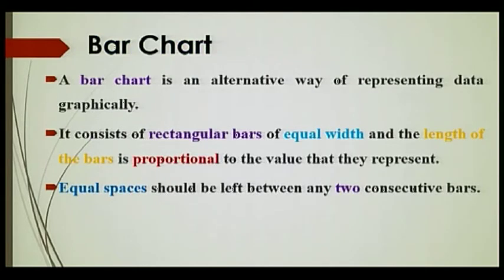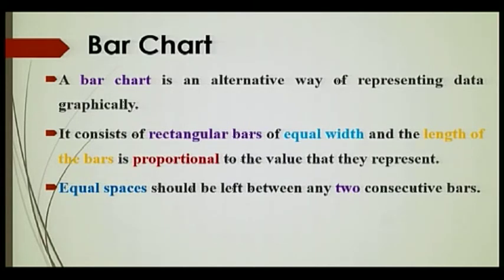What is a bar chart? A bar chart is an alternative way of representing data graphically. It consists of rectangular bars of equal width and the length of the bars is proportional to the value that they represent. Equal spaces should be left between any two consecutive bars. These are some important points regarding the construction of bar charts.